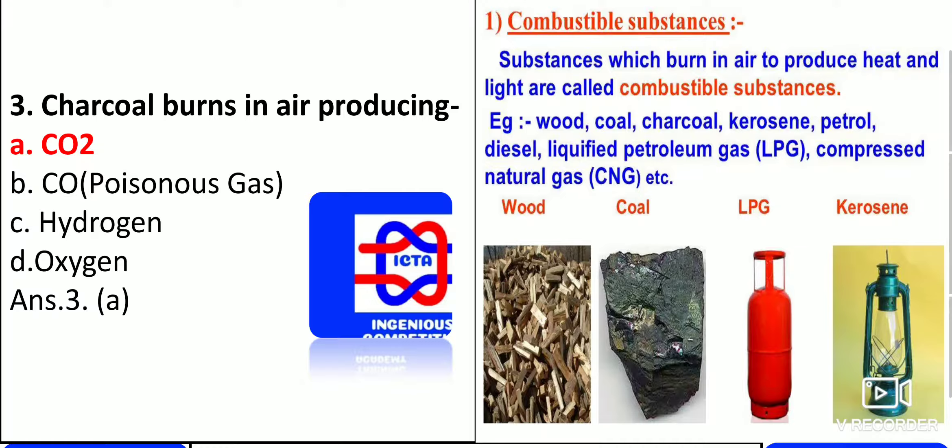In an LPG cylinder, we have butane. From wood, we get coal. Kerosene is used in lamps. These are things you have to remember.